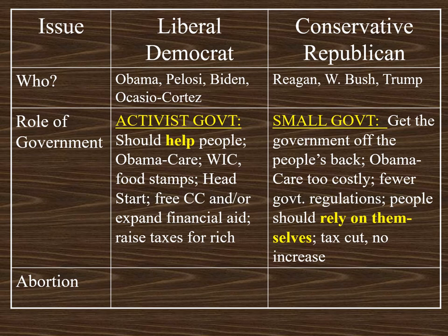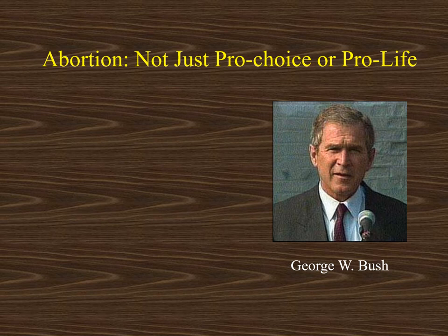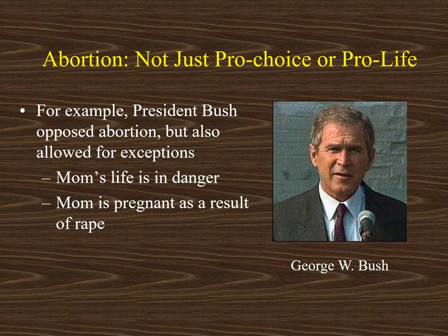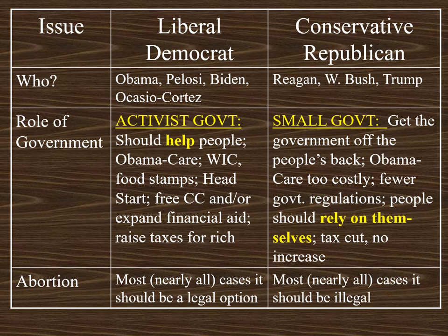The next issue would be abortion. A conservative Republican would argue that in most — just about all — cases, abortion should be illegal. It's important to move beyond simply saying one party is pro-choice and one is pro-life. For example, President Bush had a strong anti-abortion record, but he also allowed for some exceptions — if the mother's life is in danger, or if she became pregnant as a result of rape. Those were two exceptions that President Bush supported.